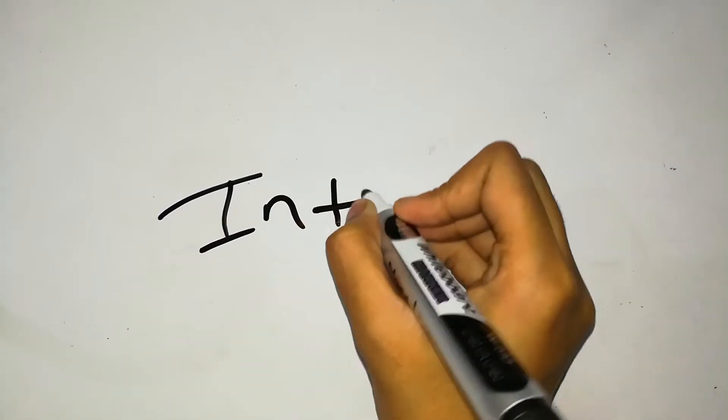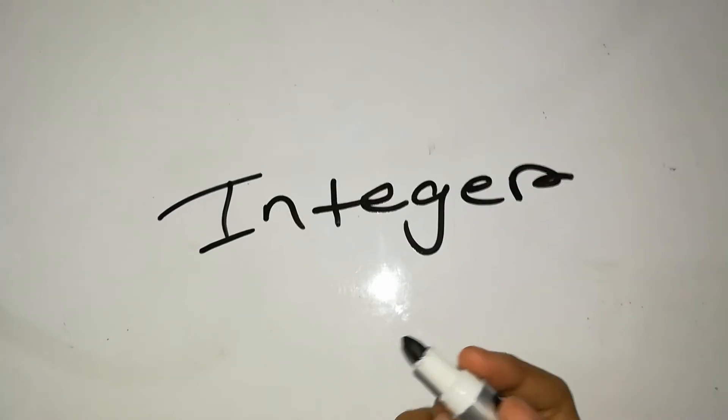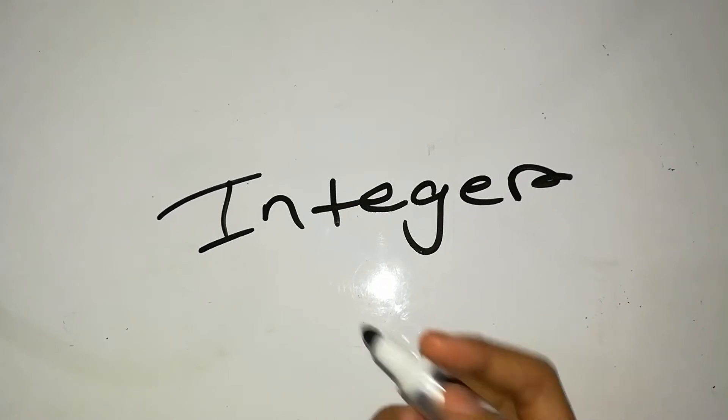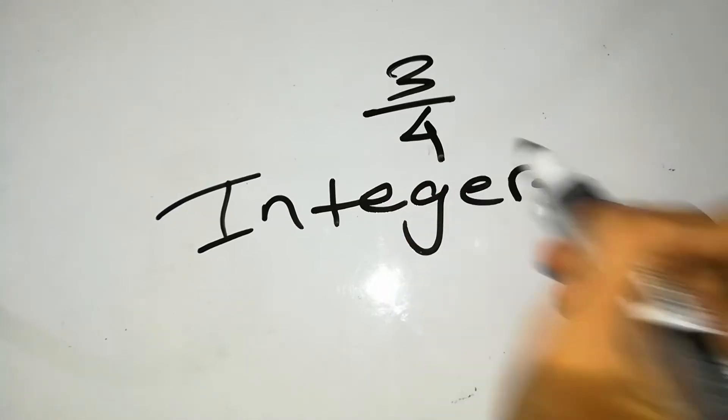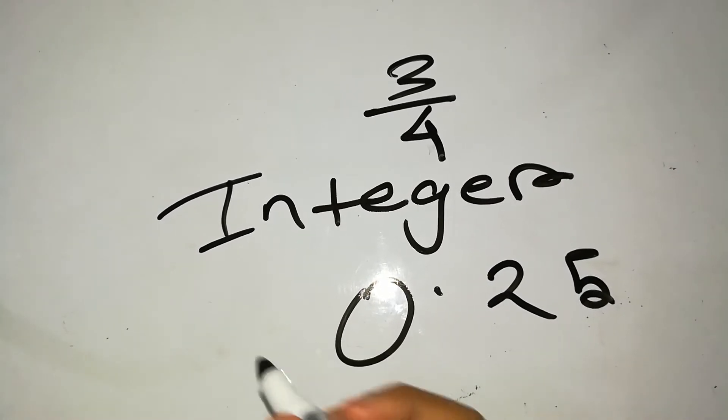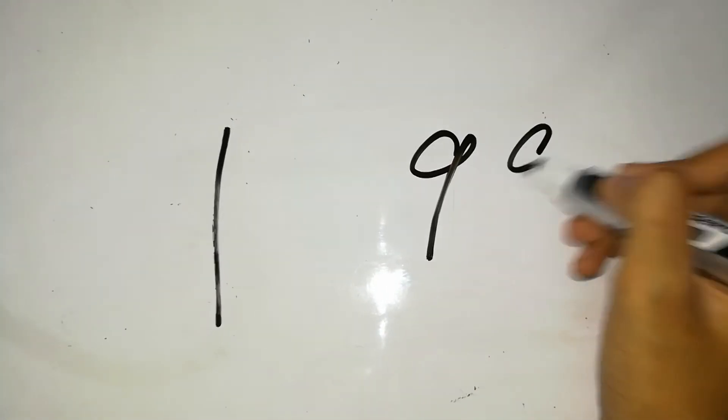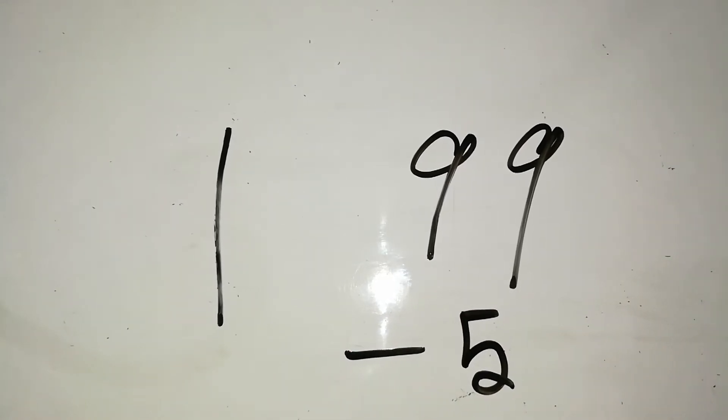Firstly, I'm going to teach you what integers are. I'm just going to write it because I'm not that good at explaining. Integer doesn't look like a fraction or a decimal form. For example, a fraction would be like 3 by 4, or a decimal form would be 0.25. We can just write it as full numbers like 1, 2, 199, or minus 5. These are integers - integers go from negative infinity to positive infinity.